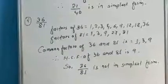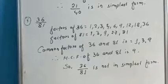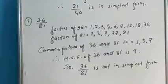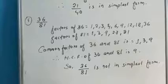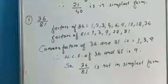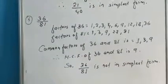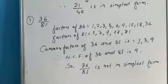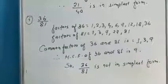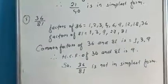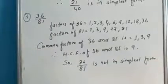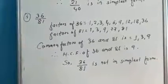Hum log ne dekha tha ki agar kisi number ka common factor 1 ke alawa kuch aur hota hai to woh simplest form mein nahin hota. Yahan par inका GCF kya ho jayega — jo sabse highest common factor hai, 9 — to inका GCF ho gaya 9. That means agar kisi bhi numbers ke GCF 1 ke alawa kuch aur hon to woh number simplest form mein nahin hota. Therefore, 36/81 is not in simplest form.